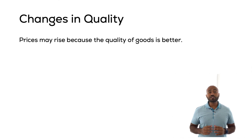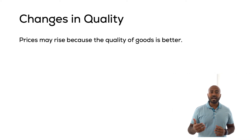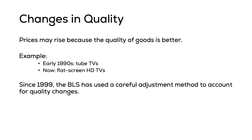Changes in quality is another bias introduced in the CPI. Over time, technology advances increase the life and usefulness of products. Although their price might increase, their cost per year or per use actually falls because we are using them for longer periods of time.